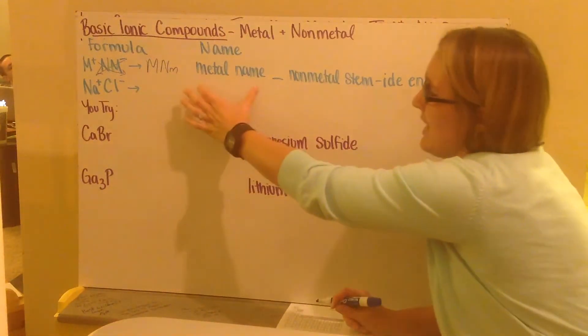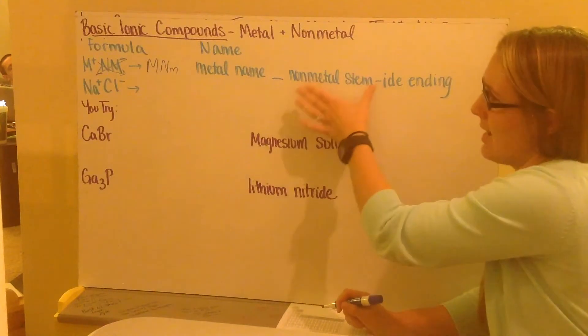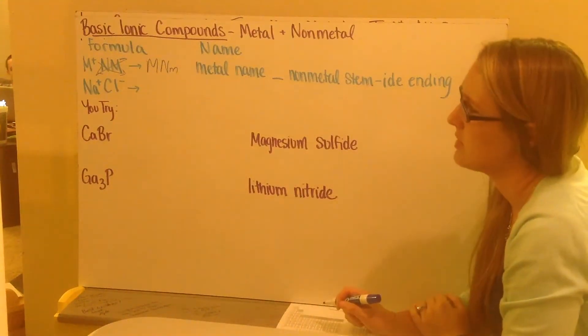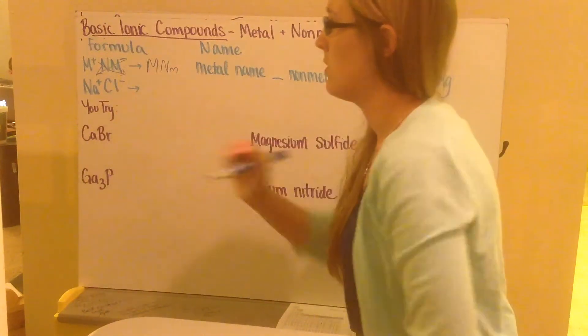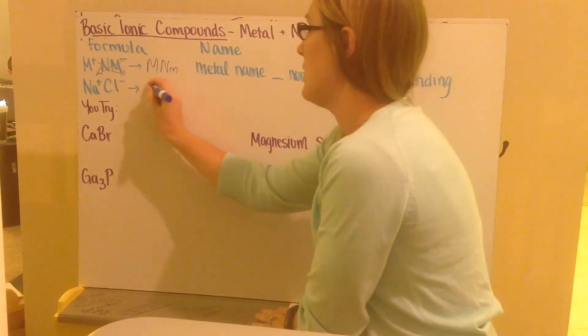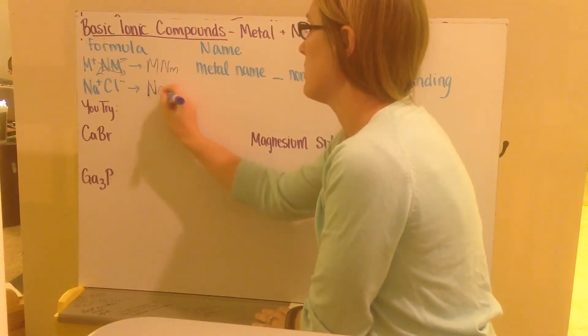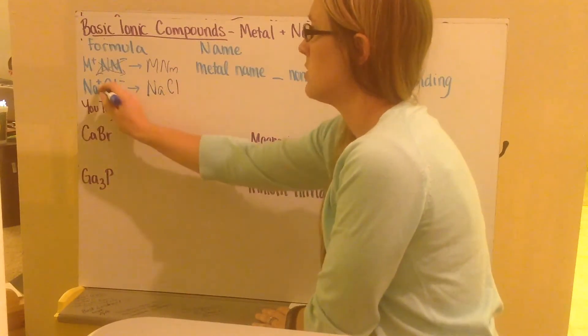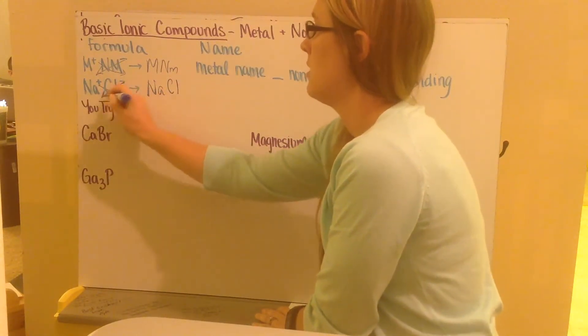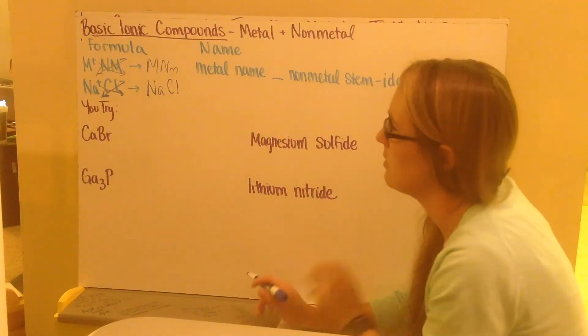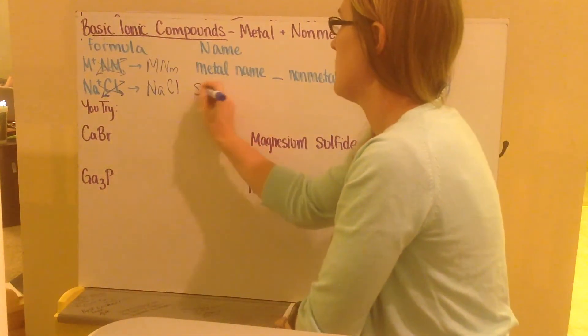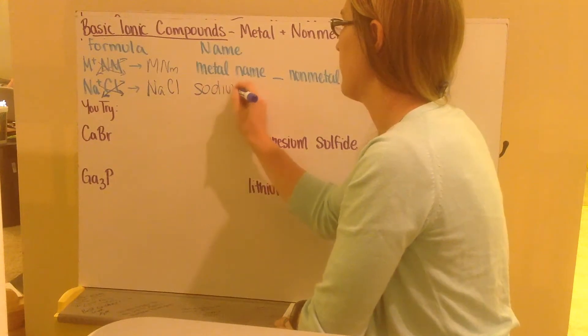So essentially the cation name and then the anion name, just like we've done previously. If you had something like sodium ions aligned with chloride ions, we'd have NaCl because both their charges were plus one. Note we don't carry the positive or negative, just the number of values. And its name would be sodium chloride.